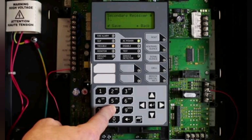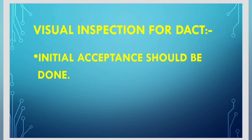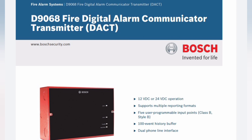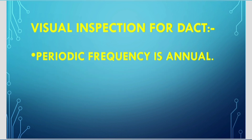Here we can discuss the visual inspection for the digital alarm communicator. For initial acceptance, the method of visual inspection requires three things as per NFPA 72: first, verify location; second, verify physical condition; third, verify system condition is normal. The periodic frequency is annual for these digital alarm communicator transmitters.